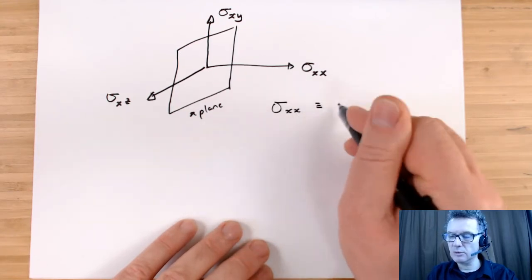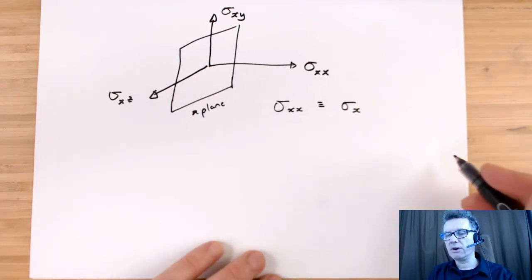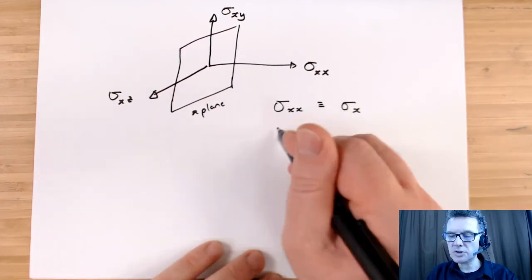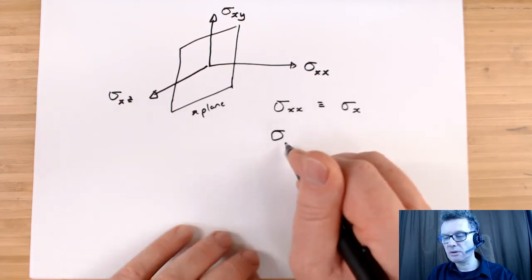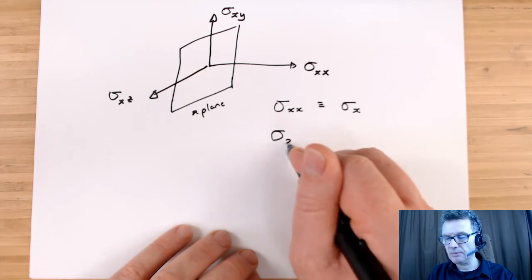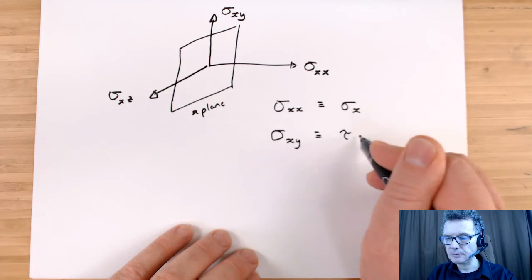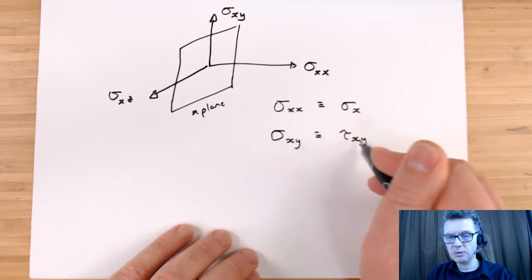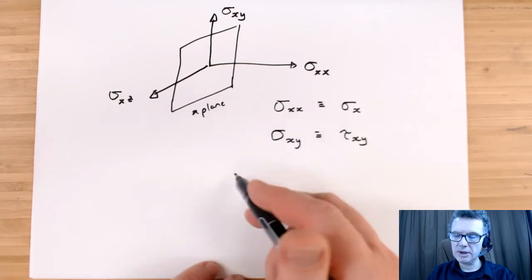And I often refer to that as simply a stress in x-direction. Shear stress, we've come across this before. What symbol do we normally use for shear stress? And we normally use tau. So tau x-y.